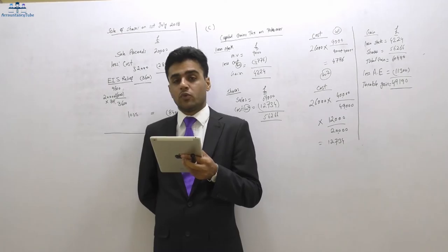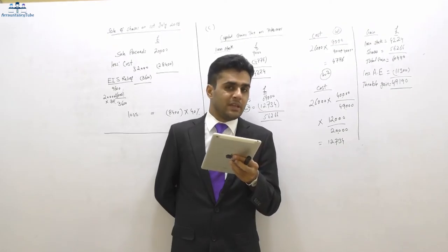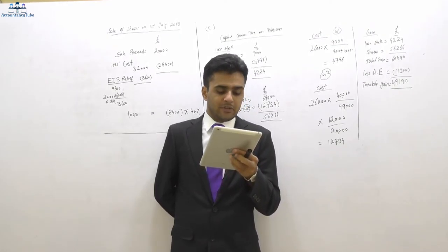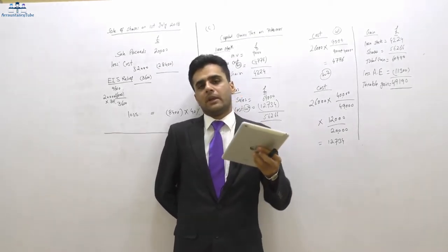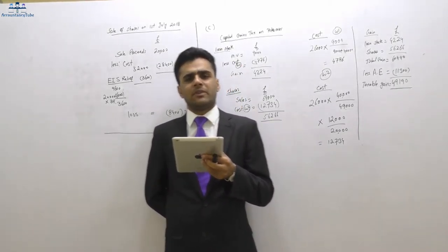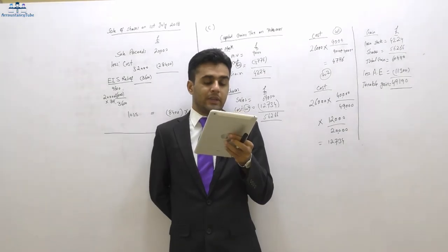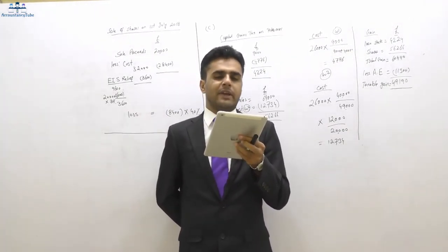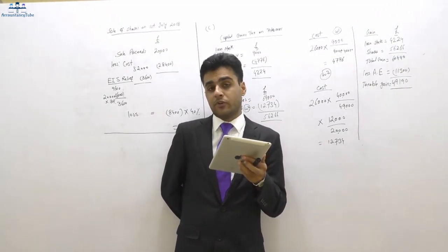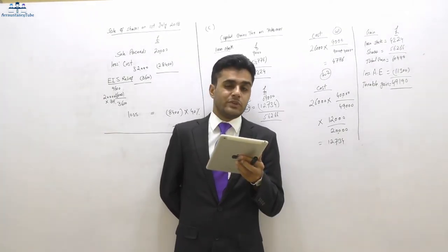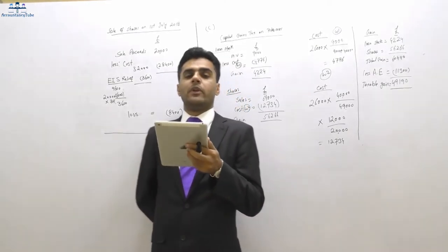I received about five or six emails from students asking the same question about entrepreneurs relief, especially about the disposal of goodwill to a close company by a related person. They mentioned contradictory statements in FTC, Kaplan, or BPP books. Please read the notes carefully - it says disposal of goodwill to a close company by a related person. A related person holds less than five percent, or if more than five percent, sells all shares within 28 days. If that condition does not apply, entrepreneur relief will not be available.